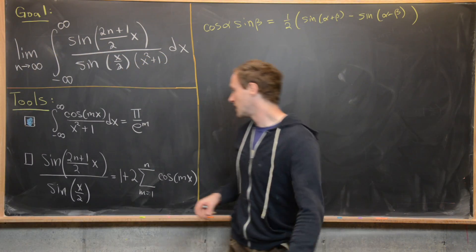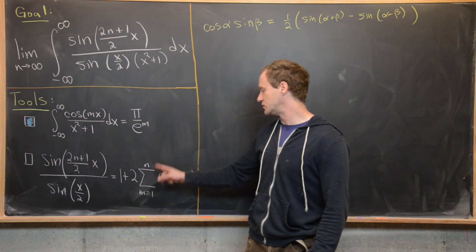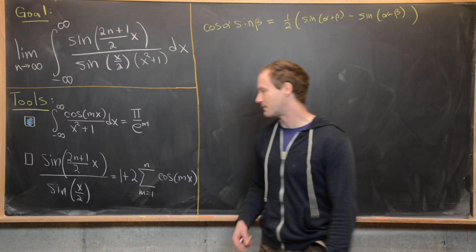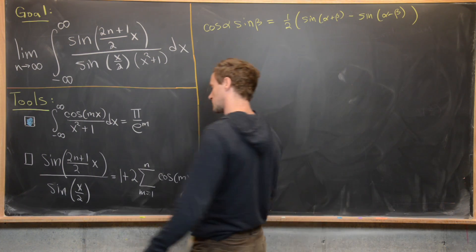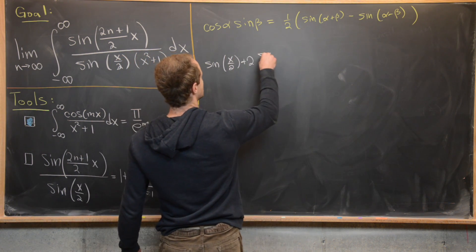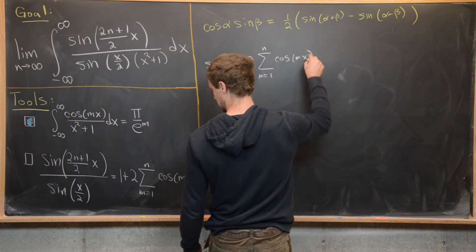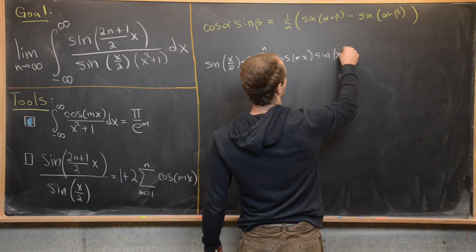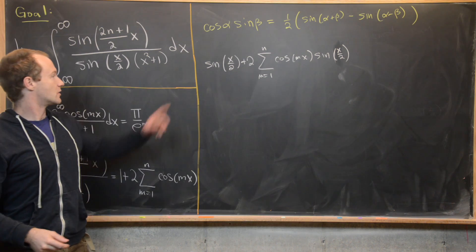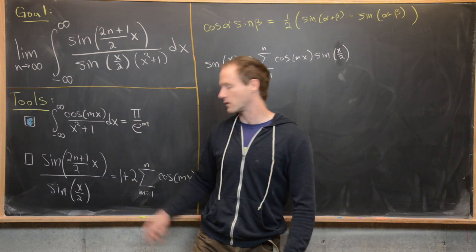Take the right-hand side — 1 plus 2 times the sum from m=1 to n of cosine(mx) — and multiply it by sine(x/2). That gives us sine(x/2) plus 2 times the sum from m=1 to n of cosine(mx) times sine(x/2). This is exactly the right-hand side of our identity multiplied by the denominator on the left-hand side.